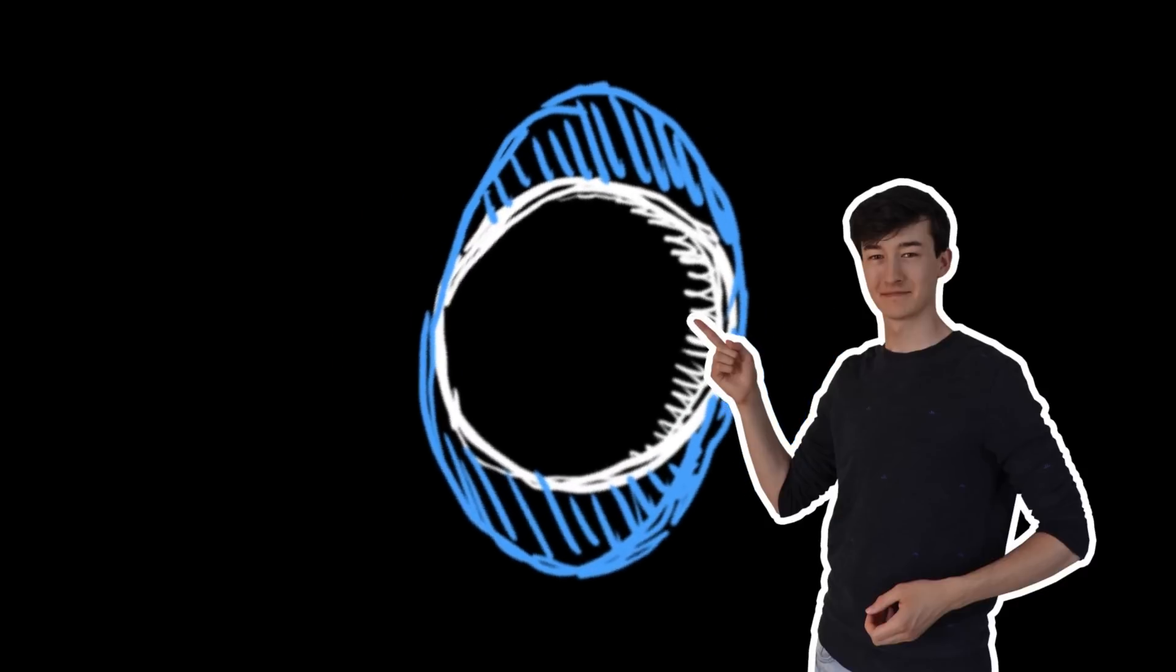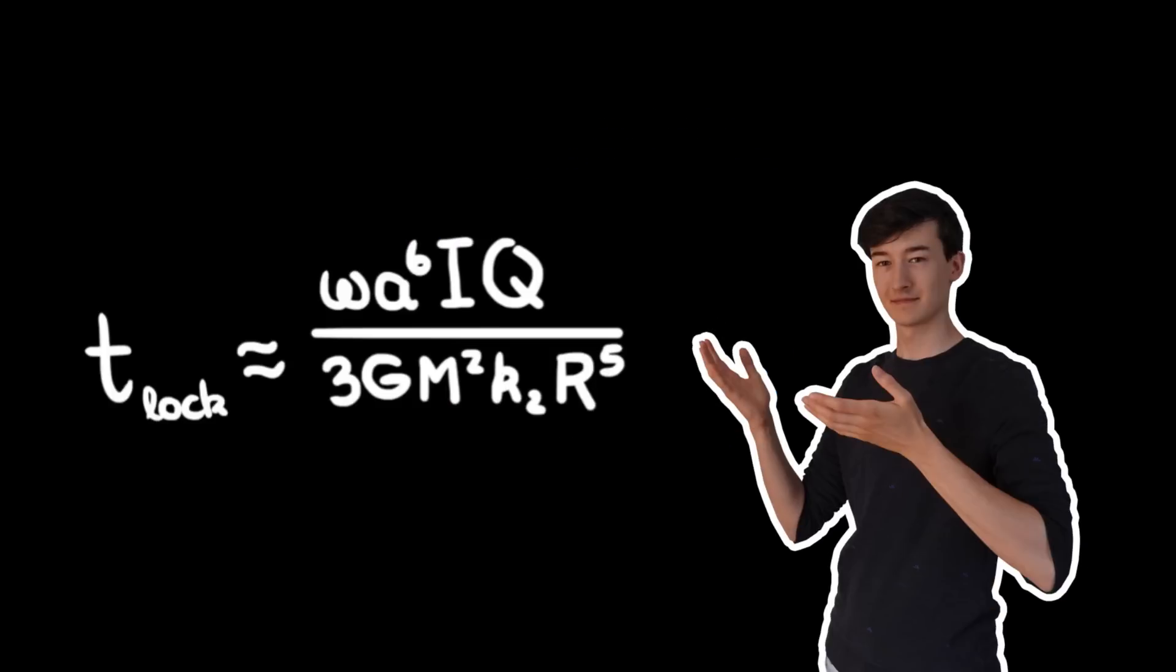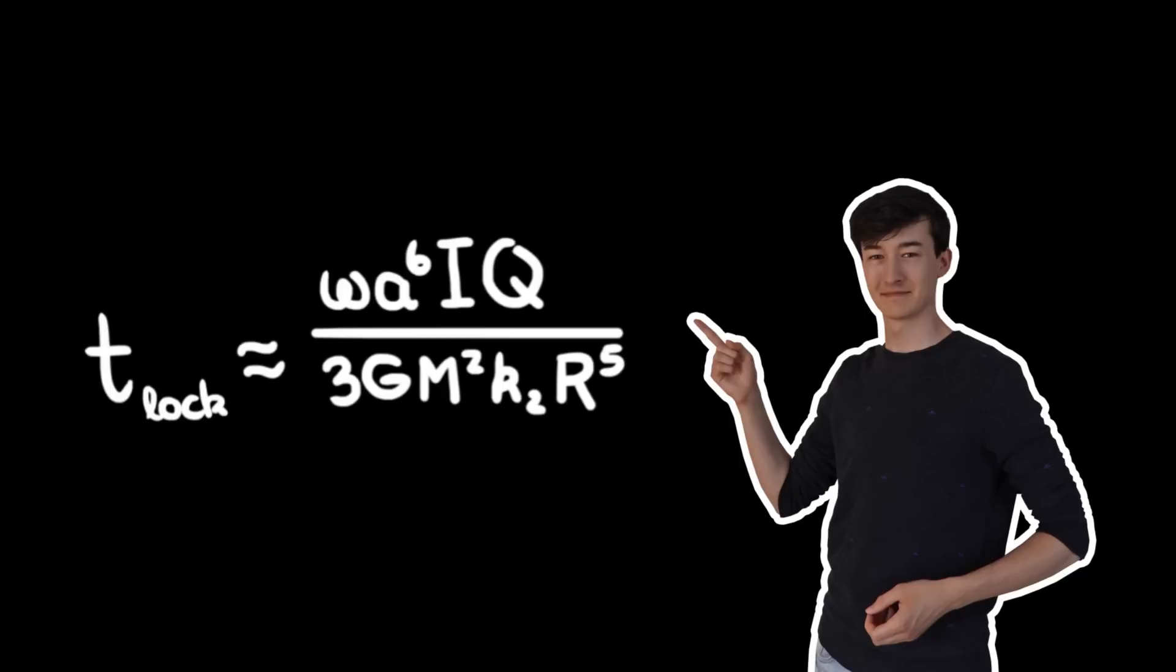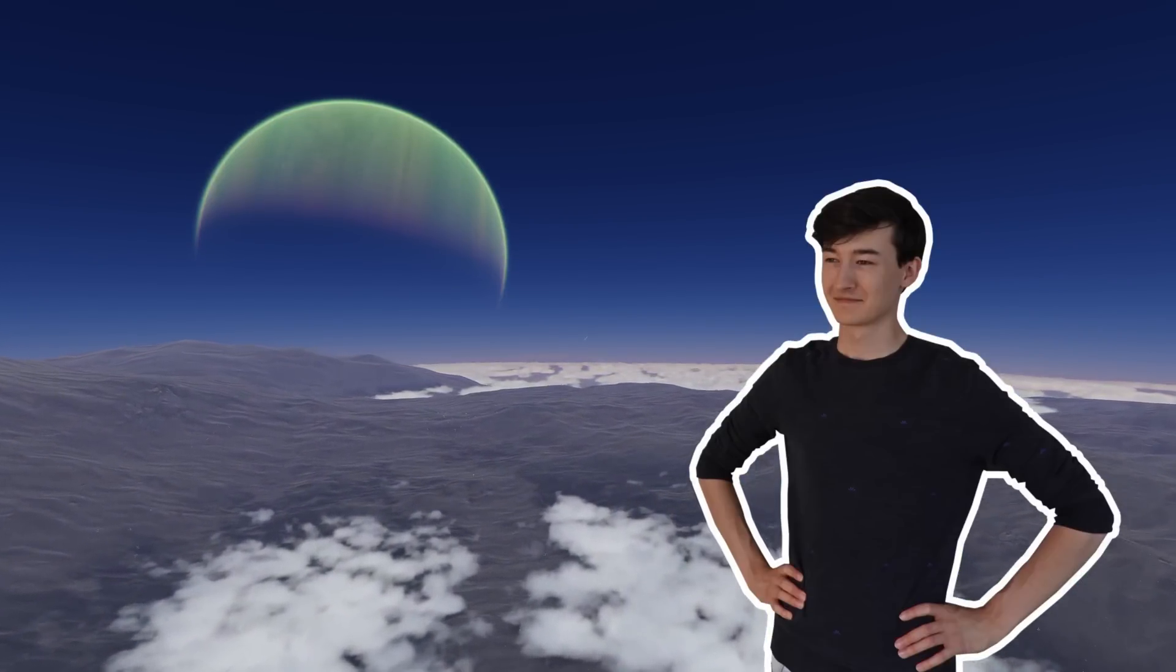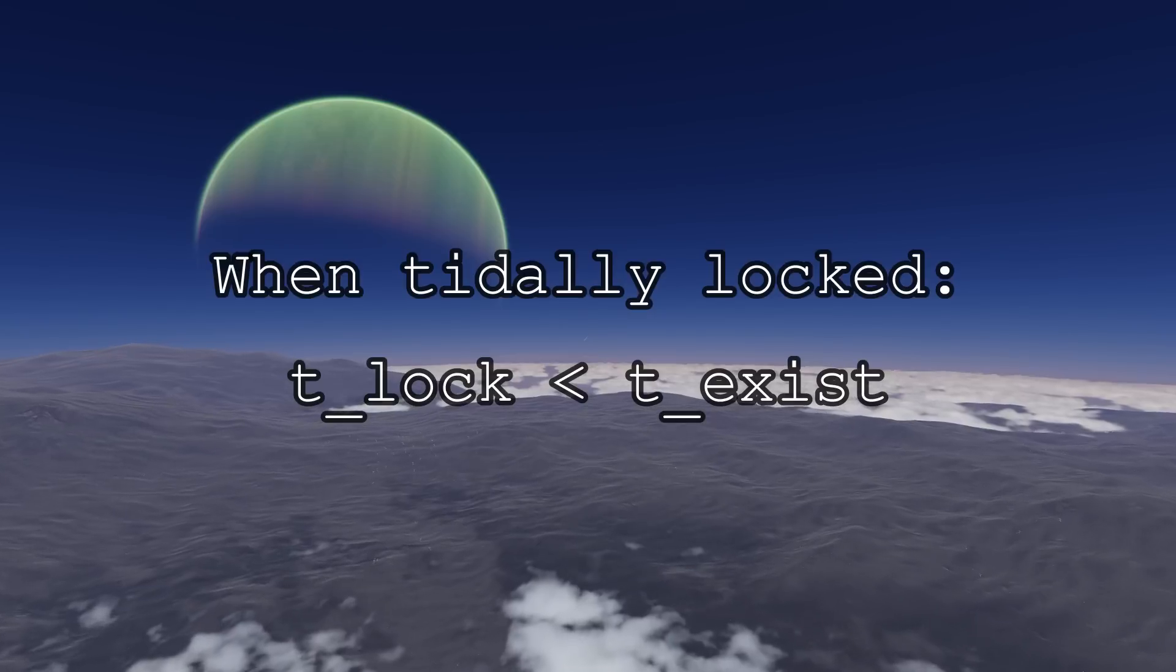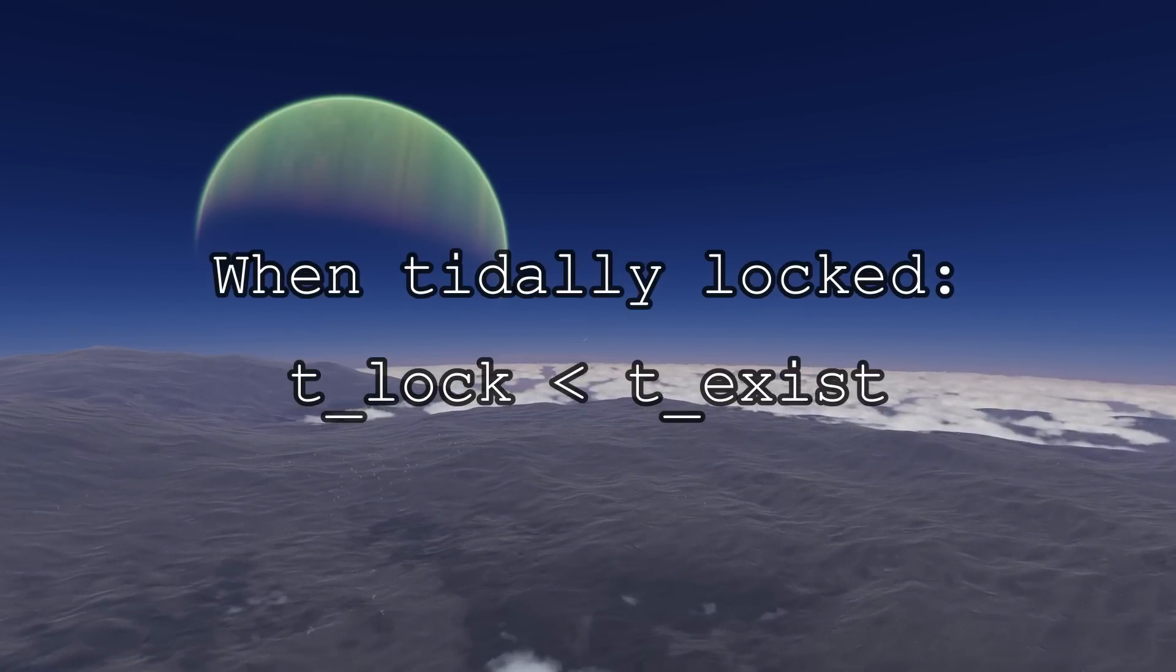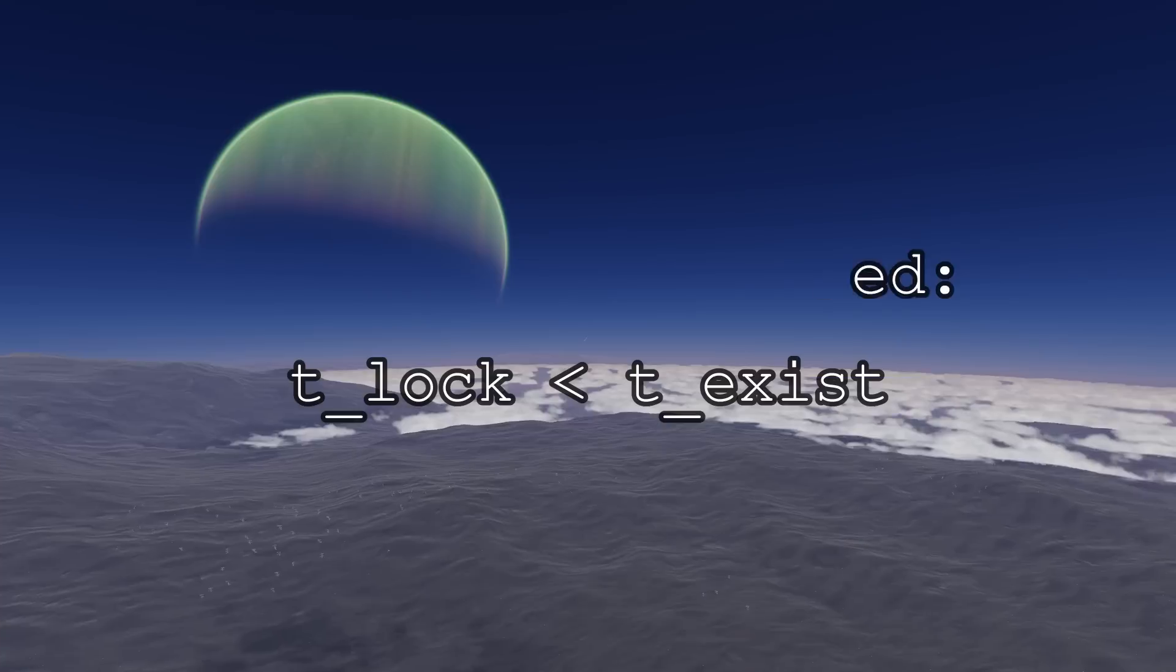And this time scale can be estimated using this equation, and you can really put that estimate in bold letters. This equation very roughly gives you the time that it takes for a smaller body to reach a tidally locked state. If you encounter an object and it is tidally locked, it means that the tidal locking timescale is smaller than the time that the object has been orbiting the other planet or celestial body. Otherwise, it would not have enough time to get locked.